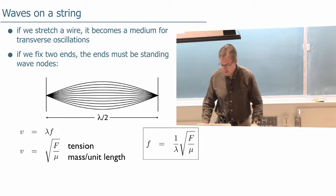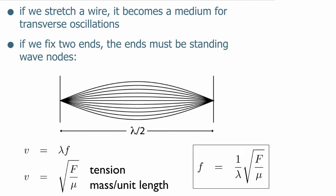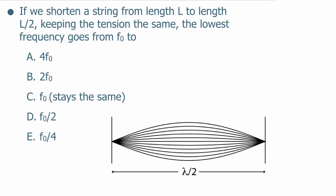Okay, so using that equation, let's do a third clicker question here. So if we shorten our string from length L to L over 2, keeping the tension the same, however, what happens to the frequency that we would get, given that the frequency is proportional to 1 over the wavelength? A, you get four times, B, twice, C, it stays the same, etc. Talk to each other, you have a minute.